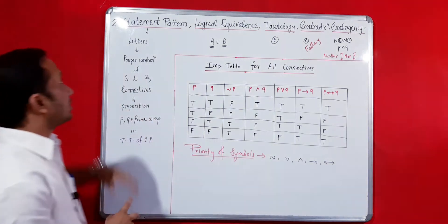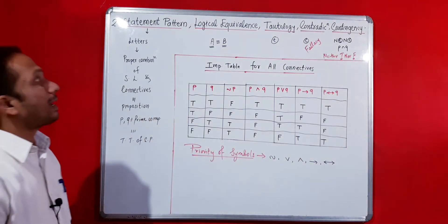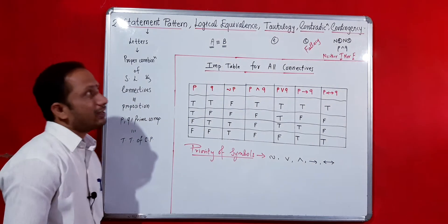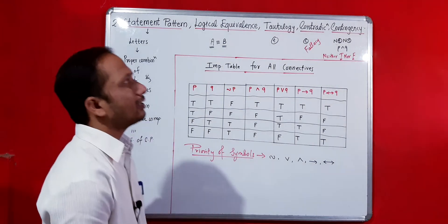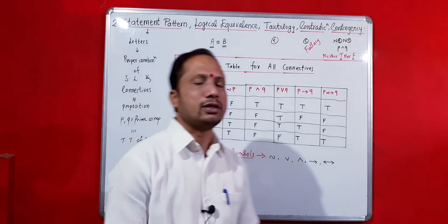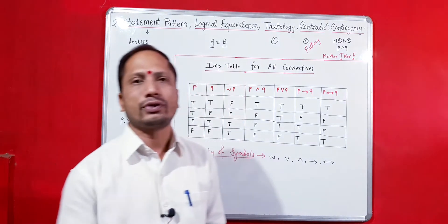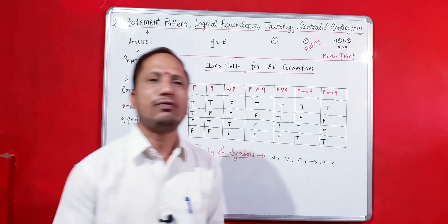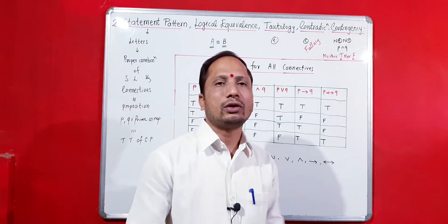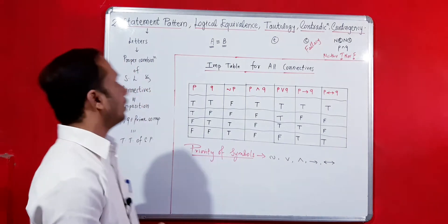Statement pattern, logical equivalence, tautology, contradiction, and contingency — these are the terms which will help you to make a truth table for the given statement pattern.